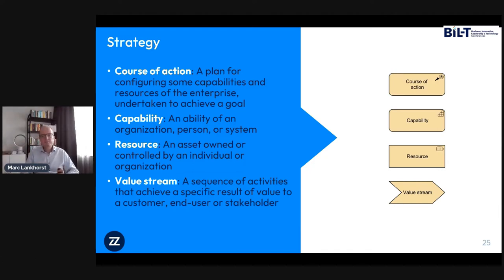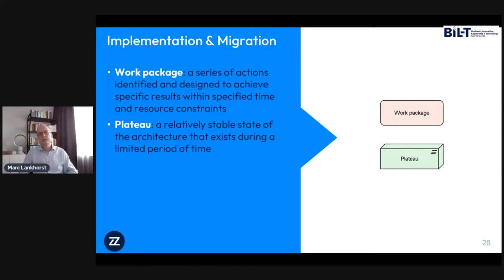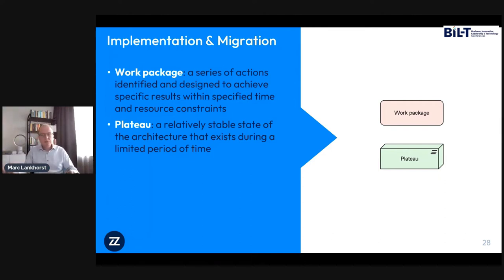From the implementation migration layer, I typically use work package — the set of work needed to implement a change, at any level from a whole change program to one task within a project. And the concept of plateau models some stable state in the architecture within a certain timeframe. You can model the stages you go through in the evolution of your architecture. It could model individual agile sprint results every two or three weeks, or a yearly plateau for a major transformation, depending on your time scales.